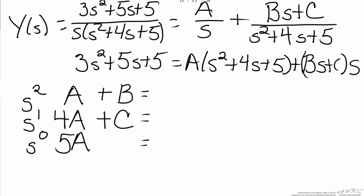We then use the left hand side to match what these coefficients have to equal. So if we look on the left hand side, we have 3s squared, 5s, and 5.